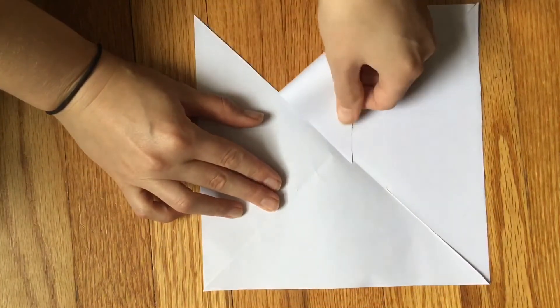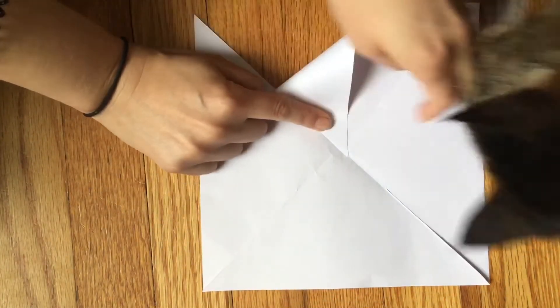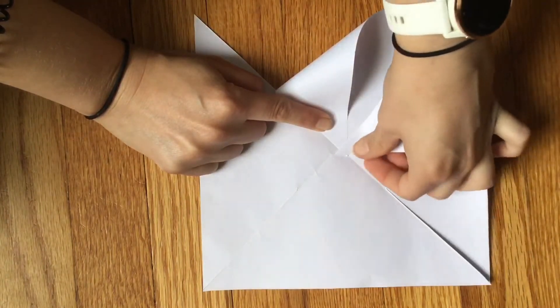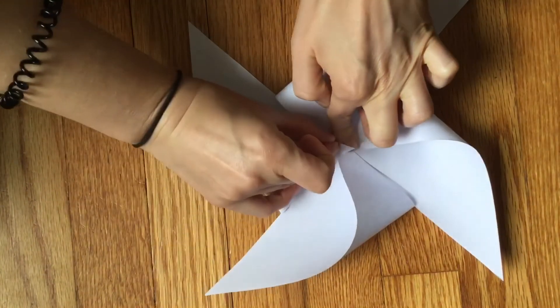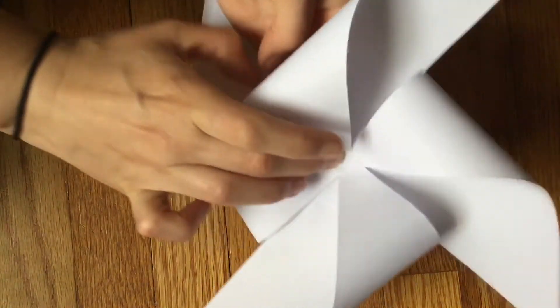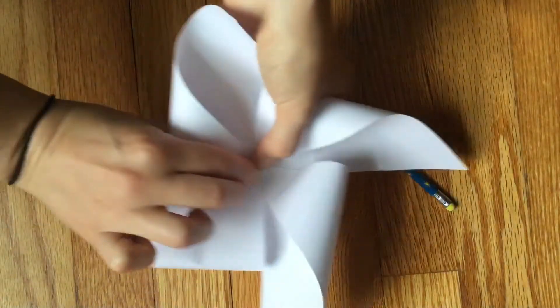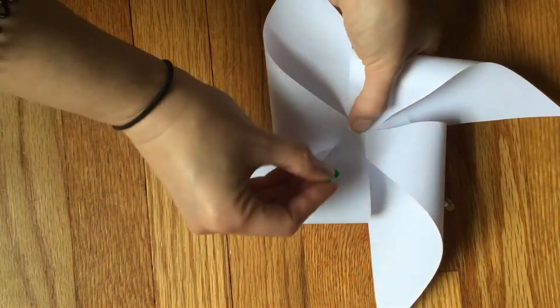Next you'll fold up one corner from each crease toward the center. You'll want to overlap the center a little bit so you have room to put your pin or tack through the middle.